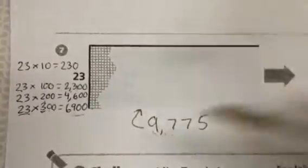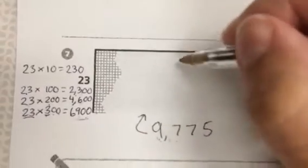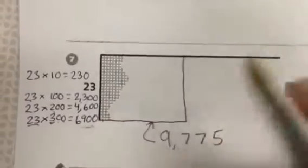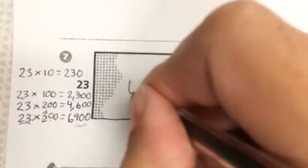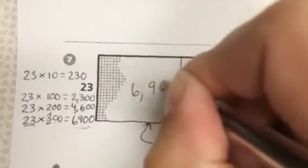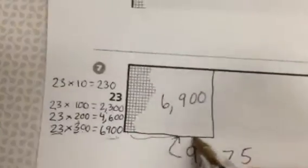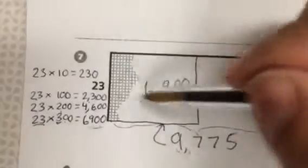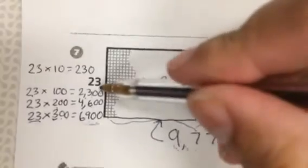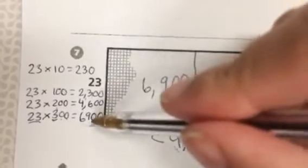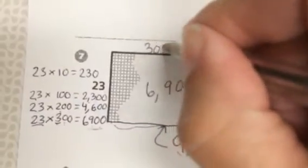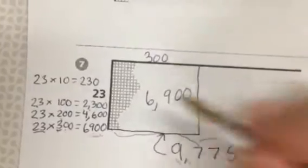I'm going to mark off an estimated box of 6,900 squares out of my total of 9,775. 6,900 divided by 23 is 300. So an array that's 300 times 23 will give me 6,900 squares.